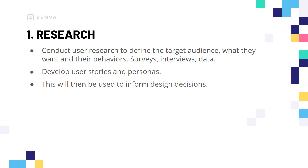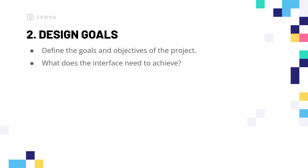Once you have completed your research you can move on to stage two which is your design goals. Design goals are basically the goals and objectives of your project — a set of criteria for what your interface needs to achieve, what you're trying to do with this interface, and how you should expect your users to interact with it.